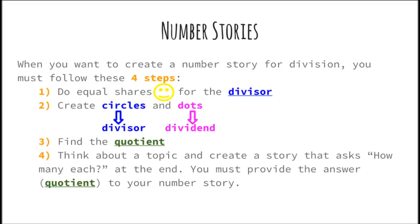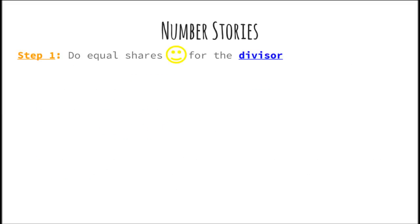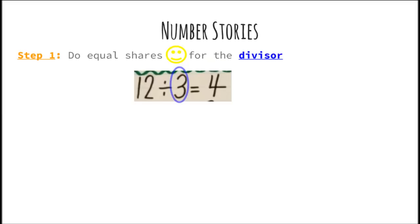The last strategy is number stories. When you want to create a number story for division, you must follow these four steps: do equal shares with happy faces for the divisor; create circles for your divisor and dots for your dividend; then find the quotient; and last, think about a topic and create a story that asks 'how many each' at the end. You must provide the answer or quotient to your number story. Remember that 3 is the divisor and 12 is the dividend.